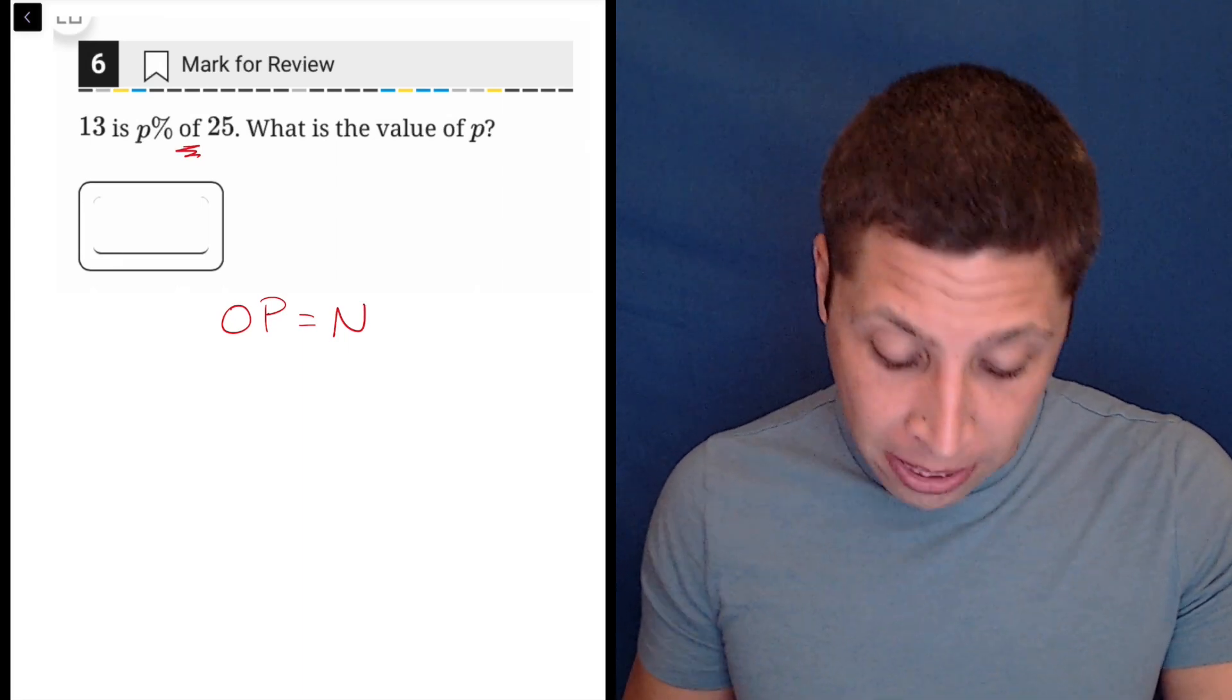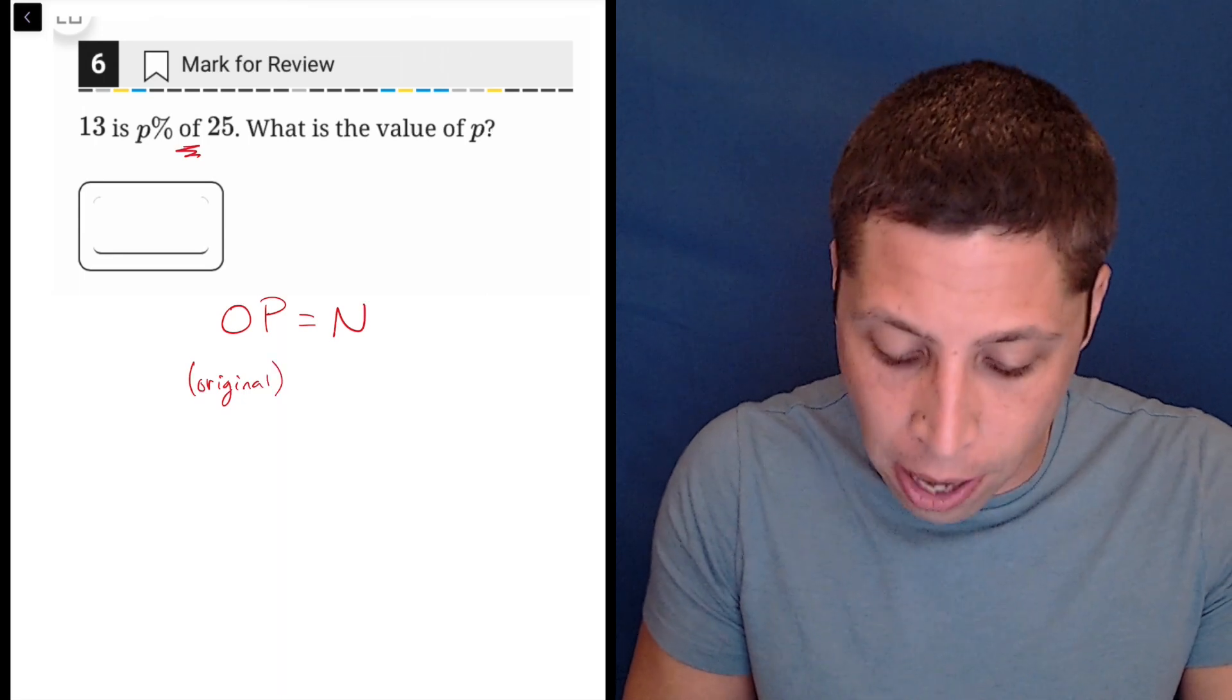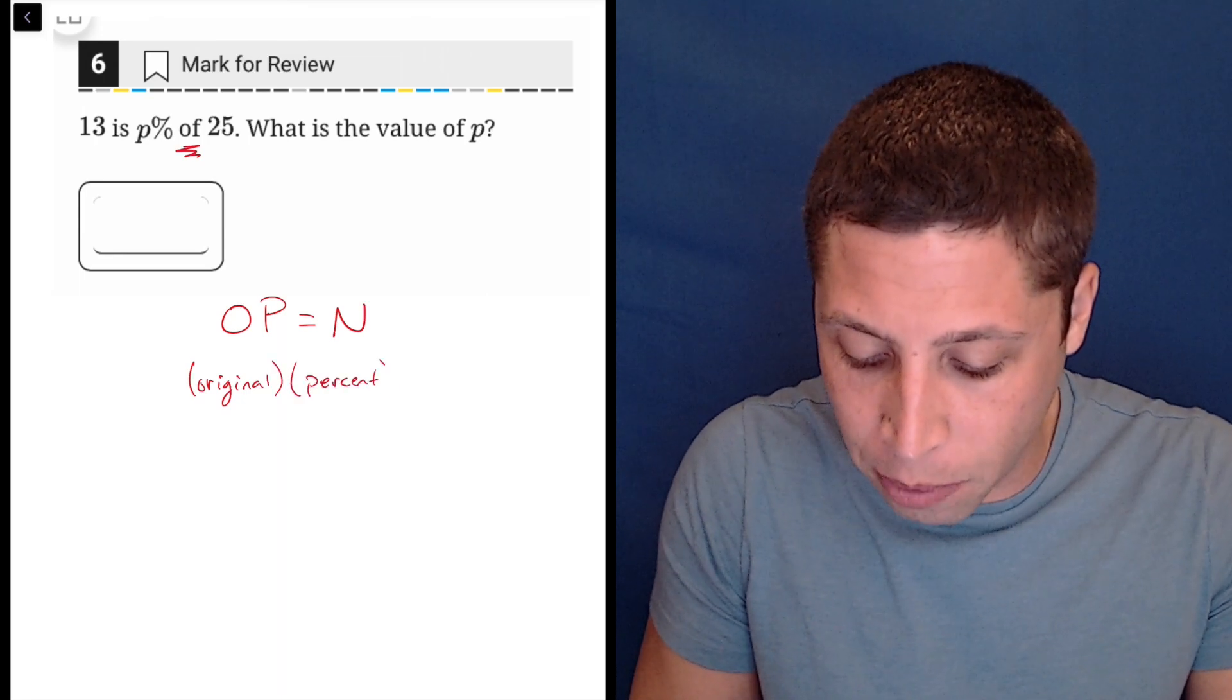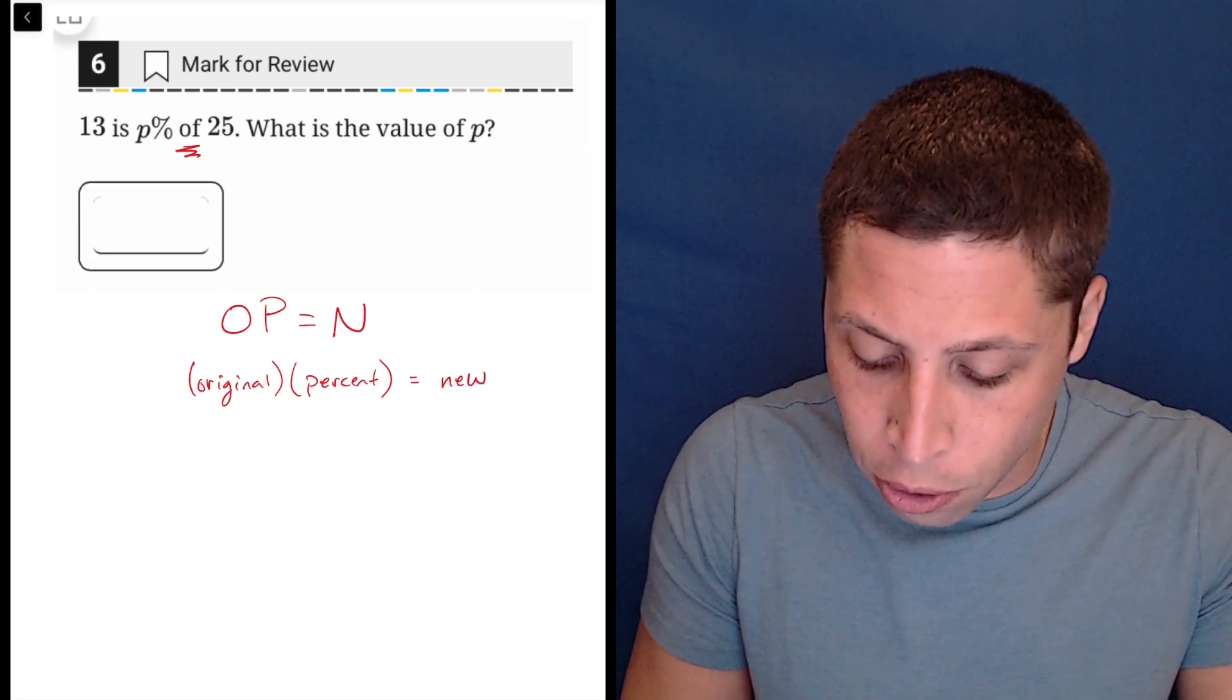Just to remind you of what this means, the O stands for the original amount, kind of our base value. The P stands for the percentage. Now that's going to be written as a decimal. So we'll get to that in a second. And then N stands for the new value.